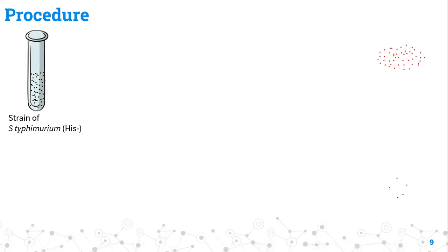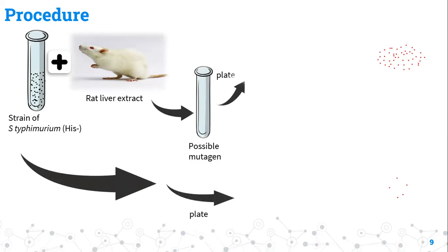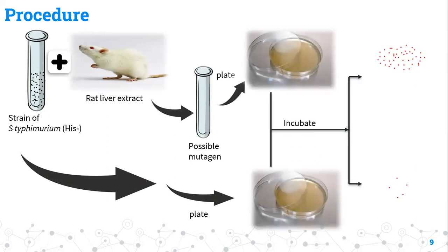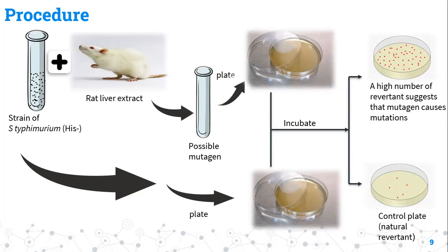In diagrammatic form: we take the histidine-negative strain of S. typhimurium, add rat liver extract, and then add the possible mutagen (test chemical) — this is the test suspension. For the control we do not add the possible mutagen; all other things are the same. We incubate both petri plates for 48 hours, then observe the number of colonies. A high number of colonies in the test plate indicates that the test chemical has mutagenic capacity and can enable growth even without histidine or tryptophan. In the control plate, a small amount of growth can be seen due to spontaneous reverse mutation in the histidine-encoding gene.